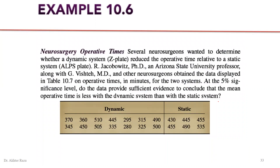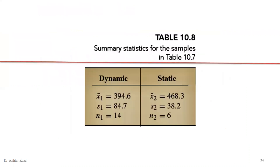Now consider example 10.6. This example involves two types of operative procedures: the dynamic system (new) and the static system (old), developed at Arizona State University. At a 5% level of significance, we test the hypothesis that the operative time is less with the dynamic system than the static system, meaning the dynamic system has a smaller average time. This is the alternate hypothesis, and summary statistics are provided.